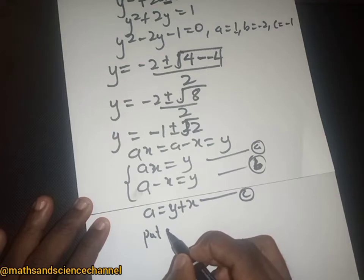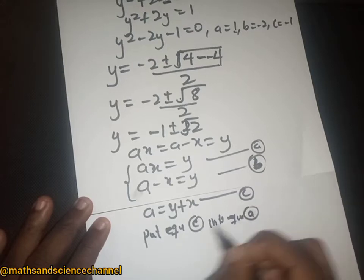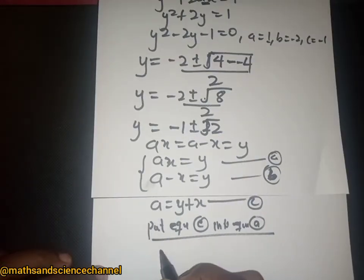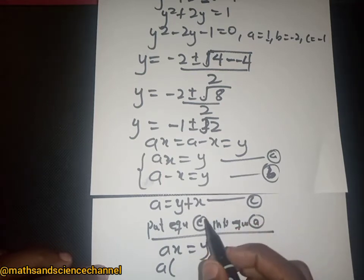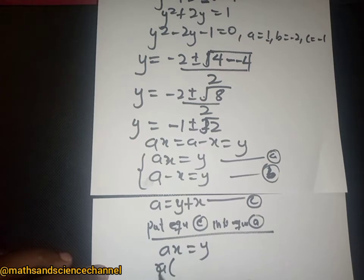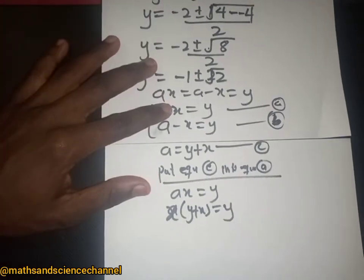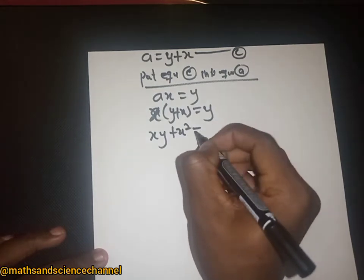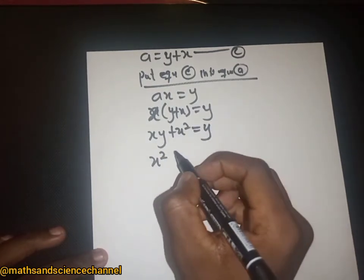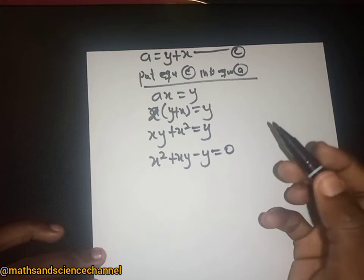We substitute equation C into equation A. Equation C is x times (y plus x) equals y. Expanding this gives x·y plus x squared equals y, and therefore x squared plus xy minus y equals zero.